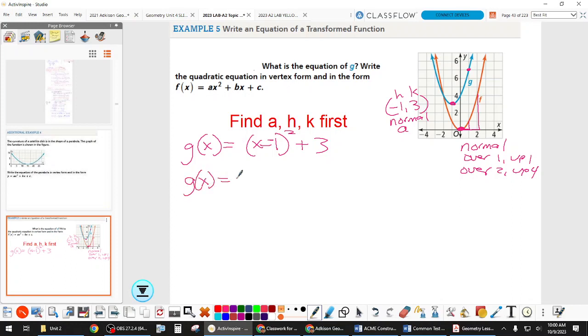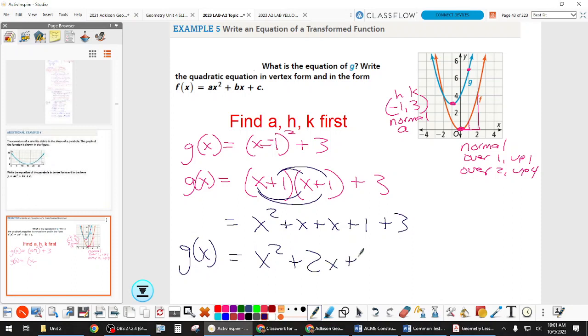So G of X in standard form, we just need to expand this binomial, so multiply everything out, distribute. We'll get X squared plus X plus X plus 1 plus 3. Then we have some combining like terms to do.